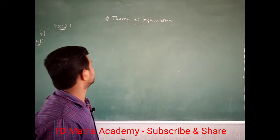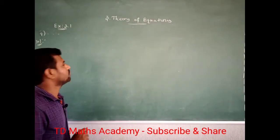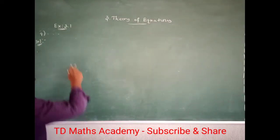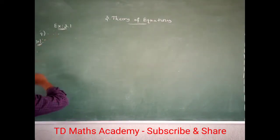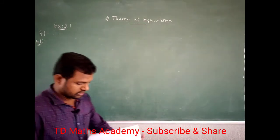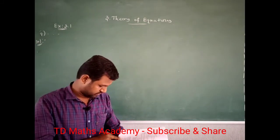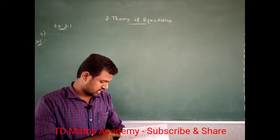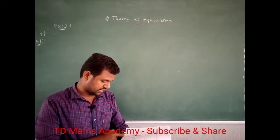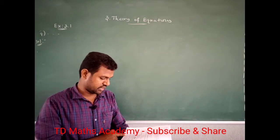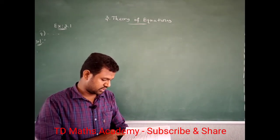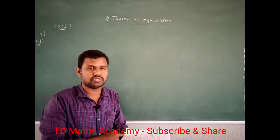Dear students, now I am going to teach exercise 3.1, question number 4. The question is: solve the equation 3x³ minus 16x² plus 23x minus 6 equal to 0.